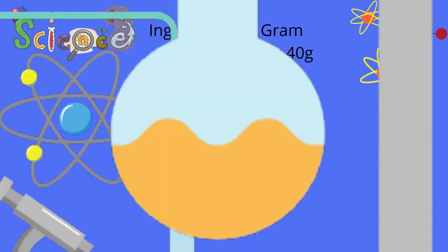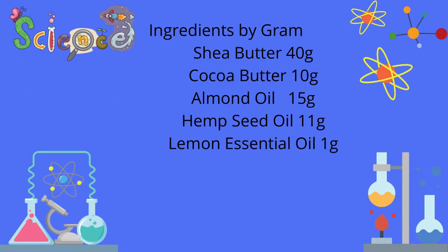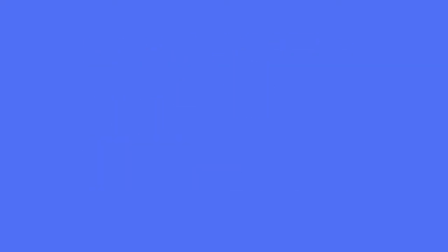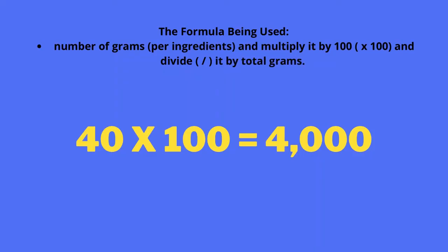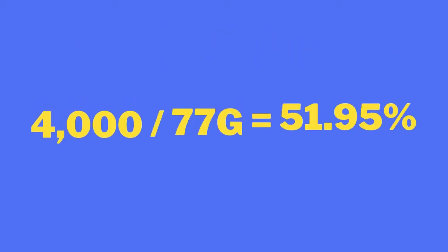For example, if you already have a weight-out recipe, count every ingredient's grams and add them up. I have: shea butter 40g, cocoa butter 10g, almond oil 15g, hemp seed oil 11g, and lemon essential oil 1g — that equals 77 grams total, so it's a 77-gram batch. To convert shea butter: 40 grams × 100 = 4,000, divided by 77 grams equals 51.95%.